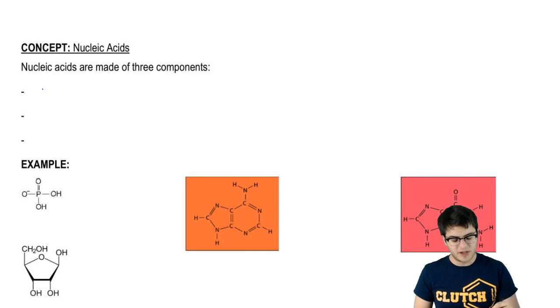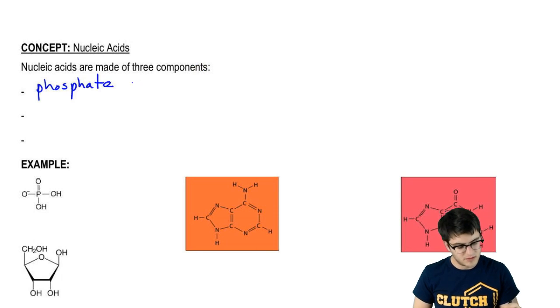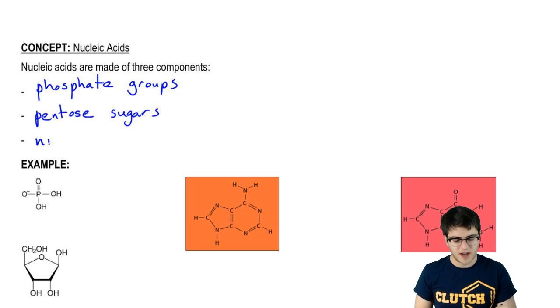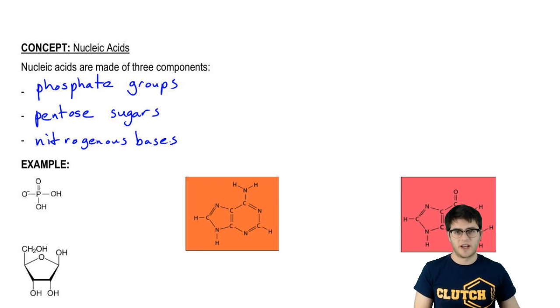Nucleic acids are made of three components: phosphate groups, pentose sugars which are five carbon sugars, and nitrogenous bases which make up the proverbial genetic code.